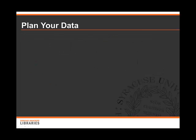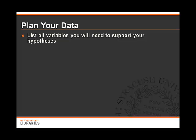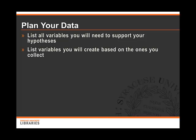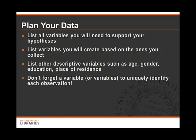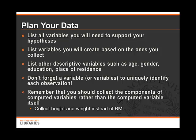To help make sure you will include all variables you will need, list them in this order. First, list all the variables you will need to test your hypotheses. Next, list any variables that you will create based on the variables you will collect. List other descriptive variables you will need, and don't forget any identification variables. If you will be using secondary data along with your own, make sure that your ID variables are created and formatted like those in the secondary data so records can be matched. Remember, you should collect the components of computed variables rather than the computed variable itself. For example, if you need BMI (body mass index), collect height in one variable and weight in another variable, then use those two to compute BMI.